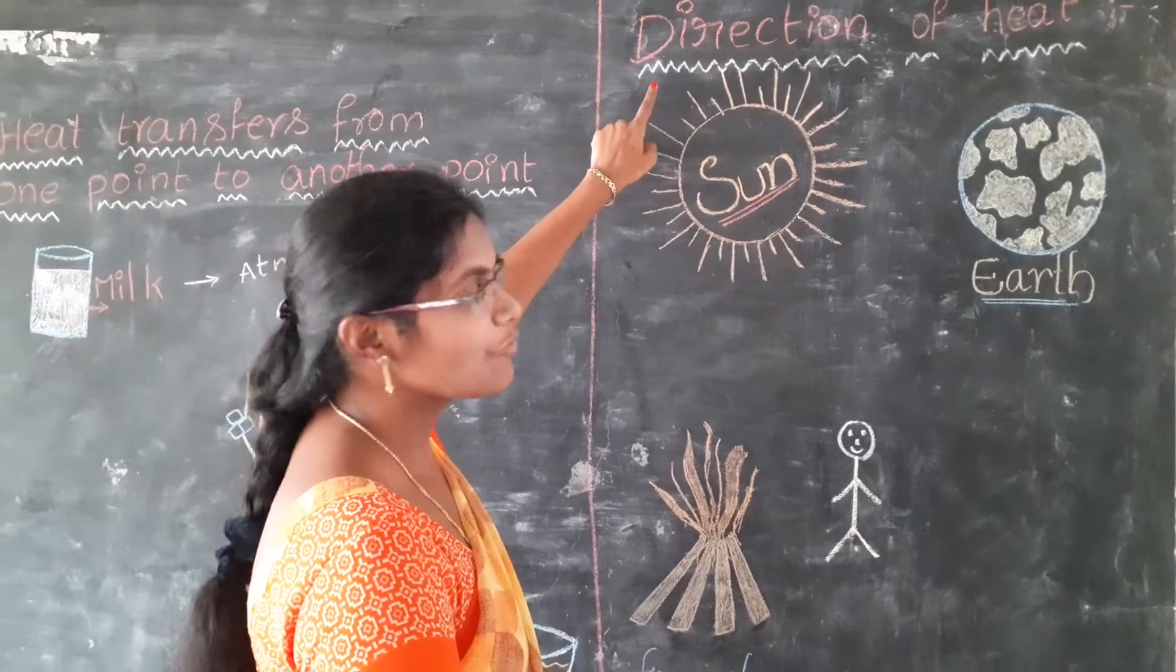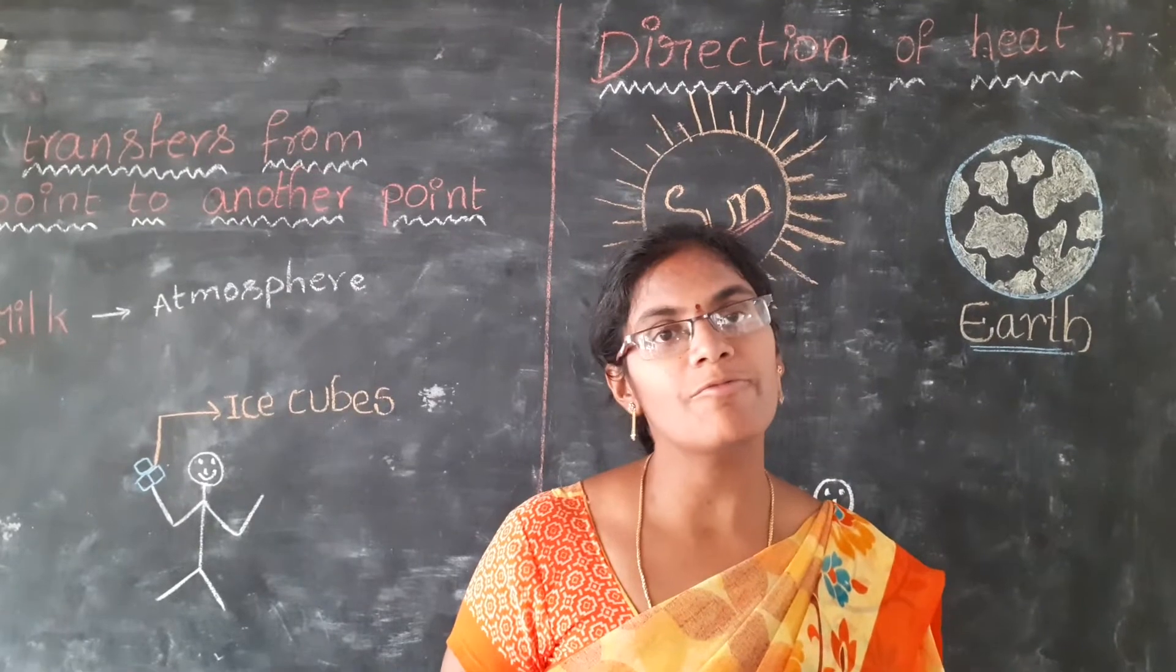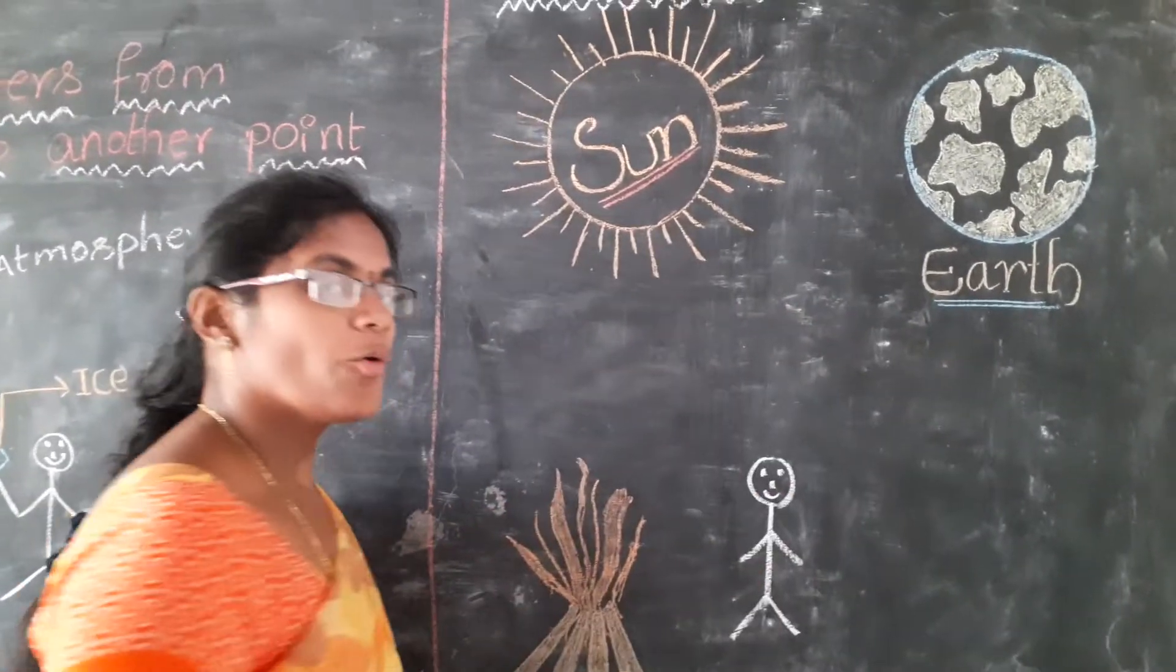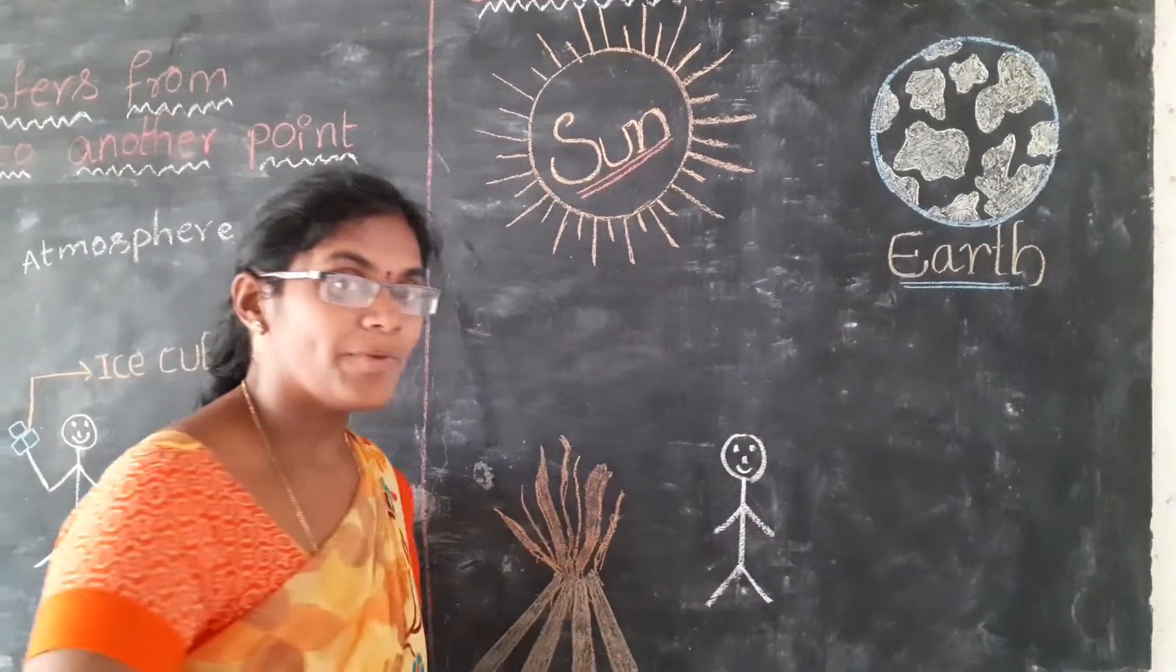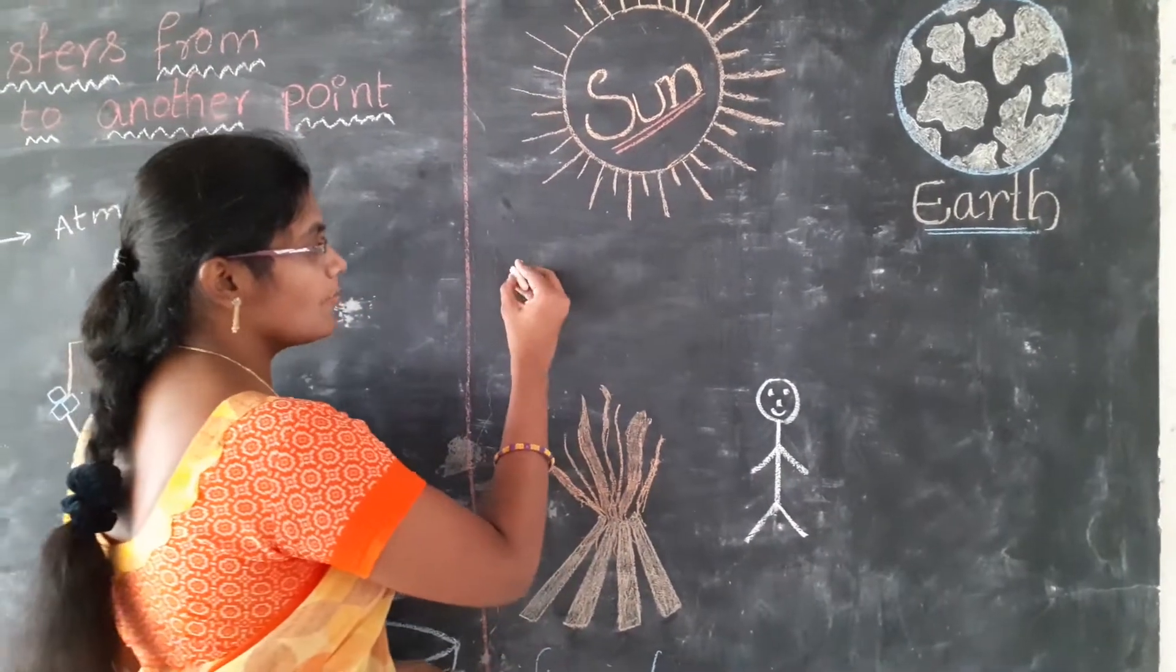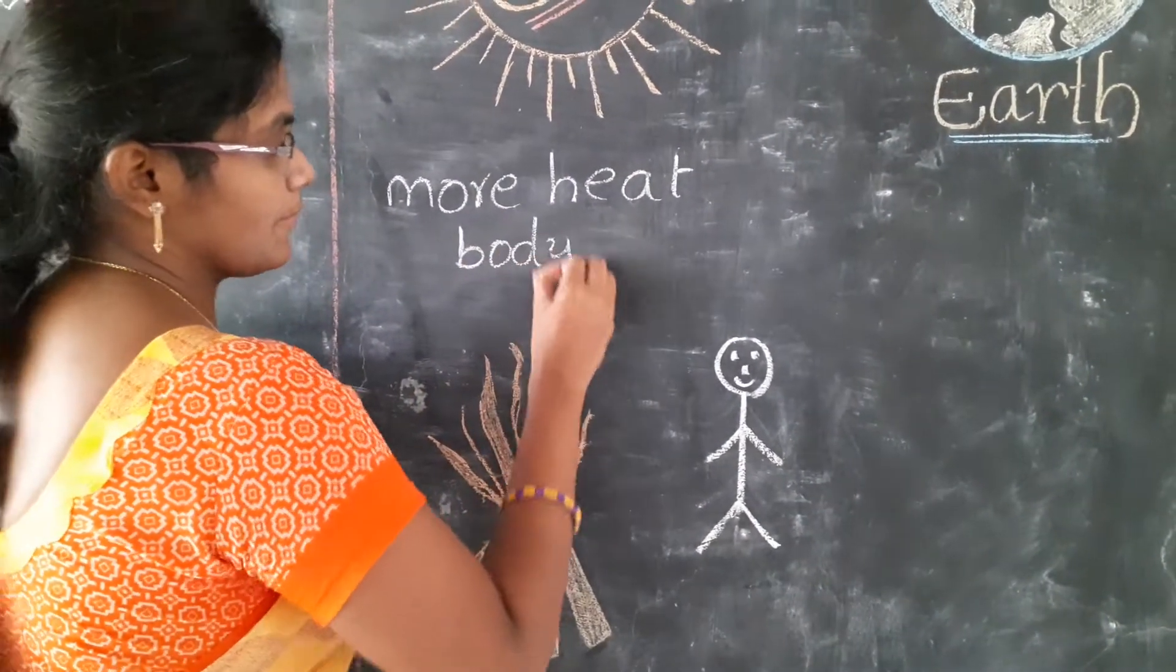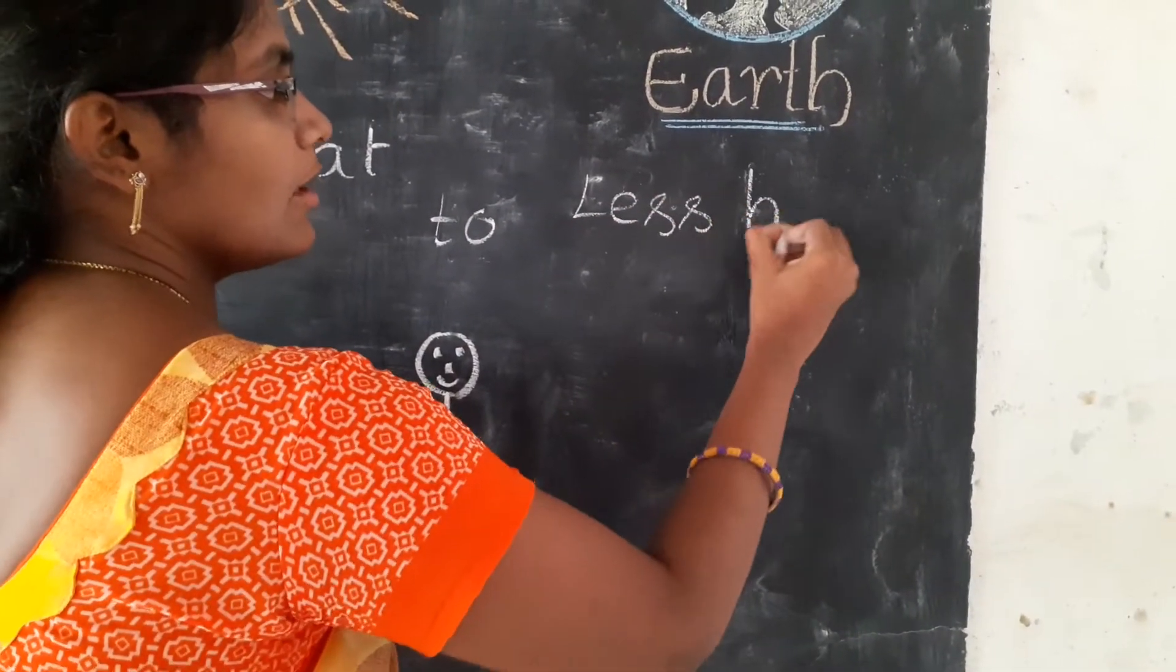Important point is direction of heat. Children, can you guess in which direction does heat flow? I will explain with a few examples. Look carefully. As in the case of sun and earth, what is the direction of heat? Heat is from sun to earth. But why not from earth to sun? Because heat always travels from more heat body to less heat body.